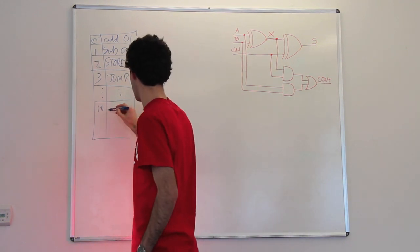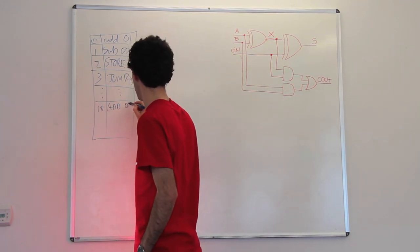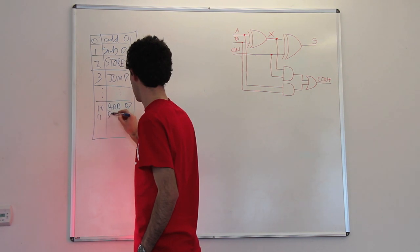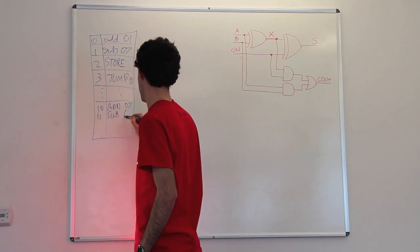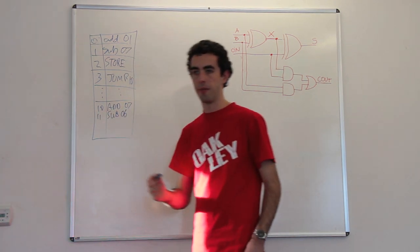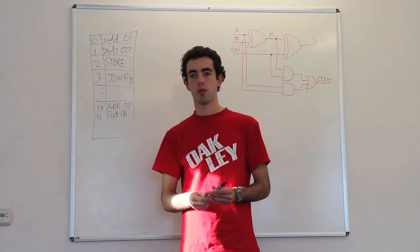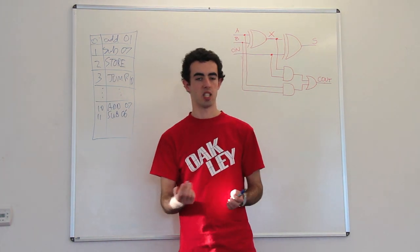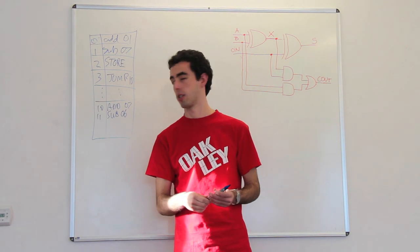So for example we might start a game with add 7, subtract 6, whatever. So that's what makes the program counter more complicated, and that's some of the circuitry which I'll be showing you in just a second.